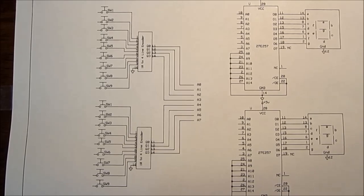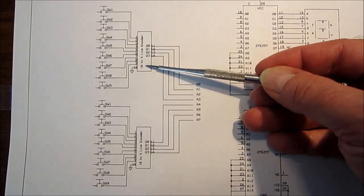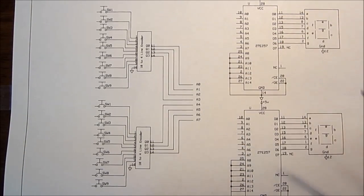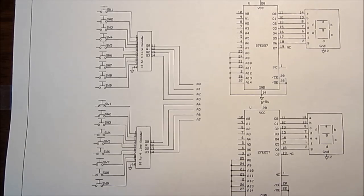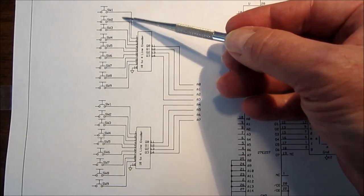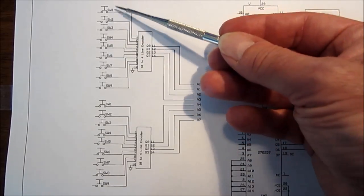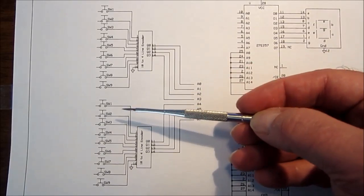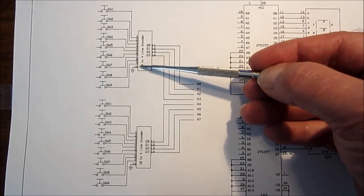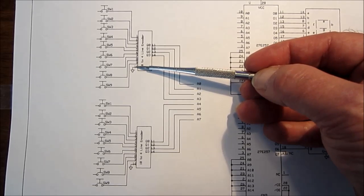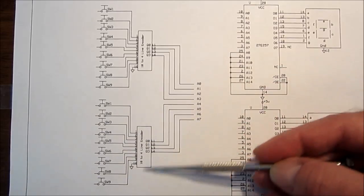But we could have built a 0 through 9 times 0 through 9 array lookup table very easily by using 2, 10 to 4 line encoders, or priority encoders as they're called. What we could have done then is taken 9 switches, a 0 being considered if no switches being pressed. So we take 9 switches and we hook it up to the input lines of this priority encoder, leaving one of them grounded because we don't need the 0. Same thing on the other one.